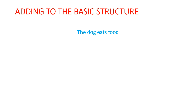Now we have learned the basic structure of the English sentence. Once we know the basic structure, we have to build on it. The problem is most learners try to start with the complex structure. You will not have any problem ordering your English sentences if you start with the basic sentence structure. Now we have the basic sentence: 'The dog eats food.' We can add to this basic structure by adding a few words.